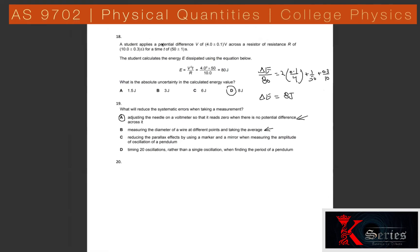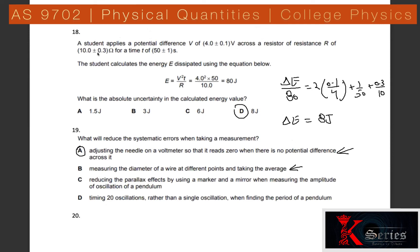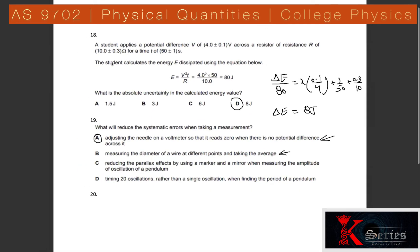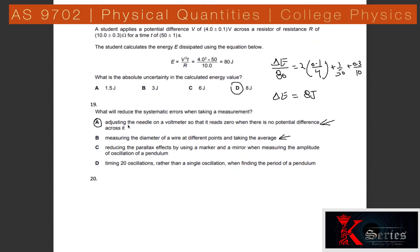Question 19: A student applies potential difference V = 4 V ± 0.1 V across a resistor R = 10 Ω ± 0.3 Ω for time t = 15 s ± 1 s. Energy E = V²t/R. For absolute uncertainty: multiply the fractional uncertainty by E (= 80 J). Power of V is 2, R and t have power 1. Fractional uncertainty = 2×(0.1/4) + (0.3/10) + (1/15) ≈ 0.1. Absolute uncertainty = 80 × 0.1 = 8 J.